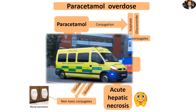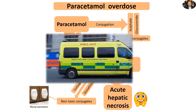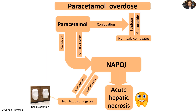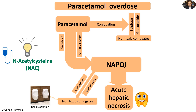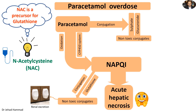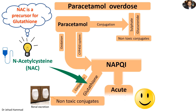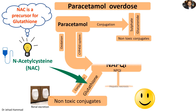Paracetamol hepatotoxicity is an emergency. If we don't intervene promptly within the first hours, the liver may be irreversibly damaged. Among the measures to save the liver of the intoxicated patient is the paracetamol antidote: N-acetylcysteine, abbreviated as NAC. N-acetylcysteine is a precursor of glutathione. Therefore, intravenous administration of NAC will reinstate glutathione storage. The restored glutathione will then direct NAPQI toward the safe conjugation pathway, producing non-toxic conjugates that are excreted by the kidney.